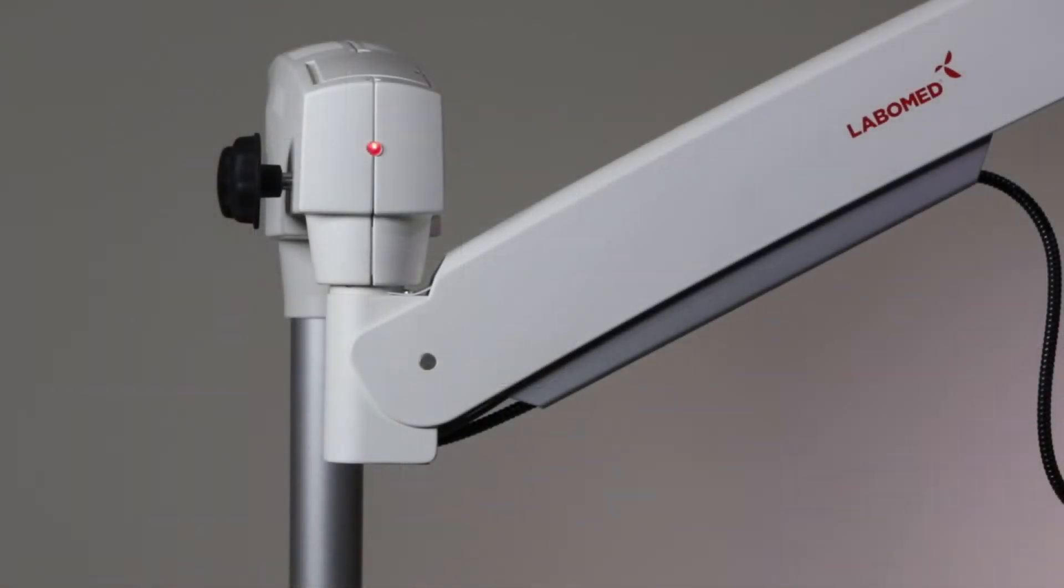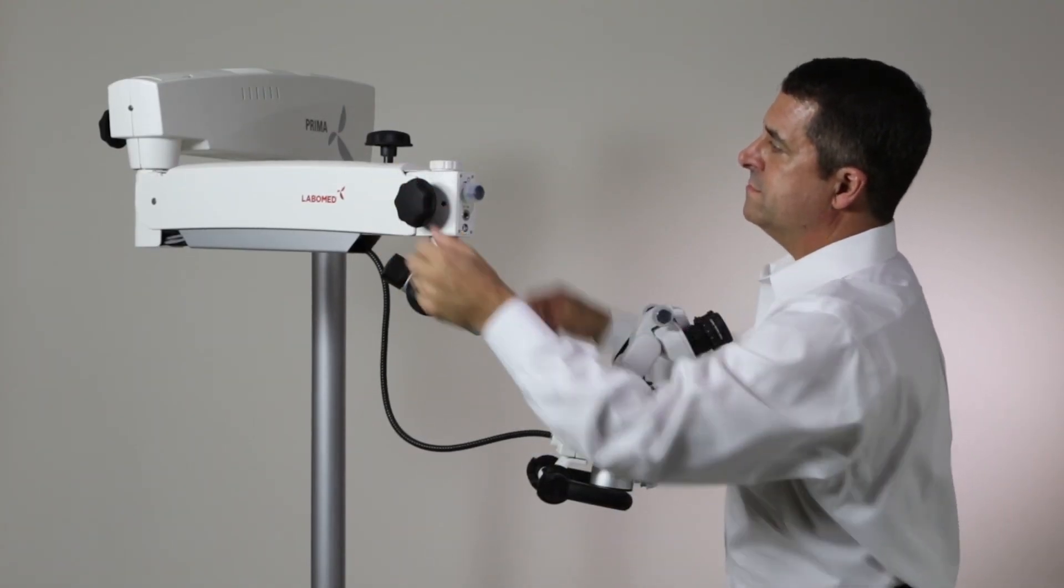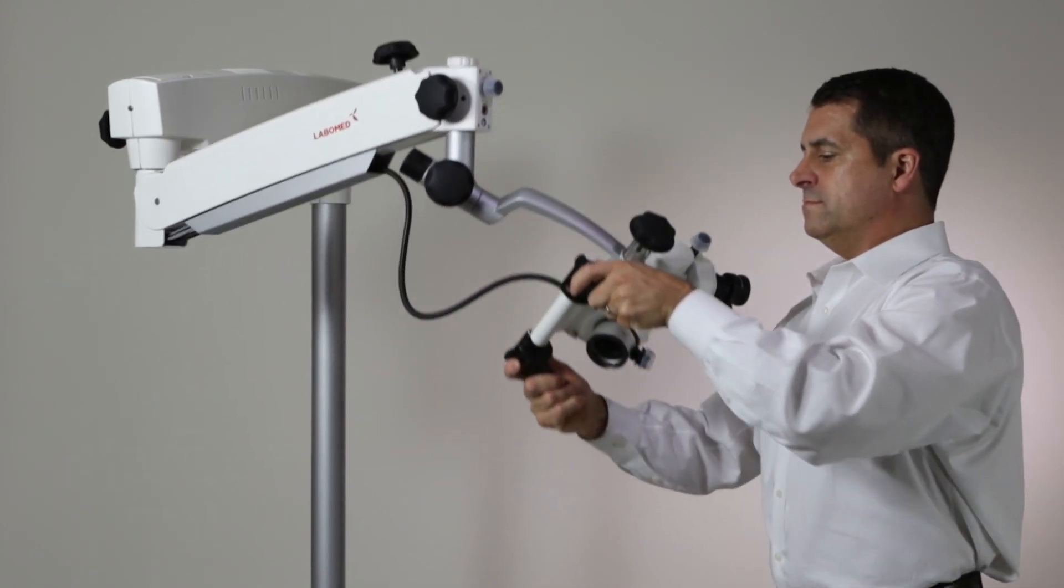Move the microscope downward to take it out of the park position. Loosen all the locking knobs and test all points of articulation, ensuring there are no obstructions.